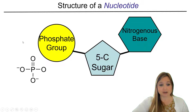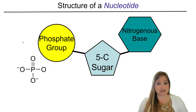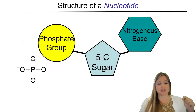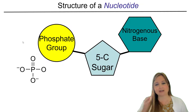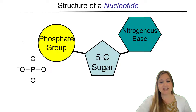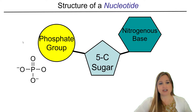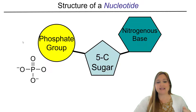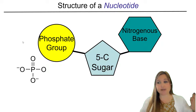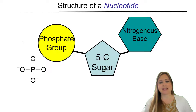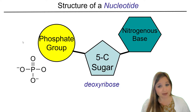A phosphate group is a phosphorus atom that's bonded to four oxygen molecules. You can see three of those are with a single bond, and one of the oxygens is bonded to the phosphorus with a double bond. So that's a phosphate group. Now, the phosphate group is bonded to a five-carbon sugar, and sugars have carbon, hydrogen, and oxygen in them.